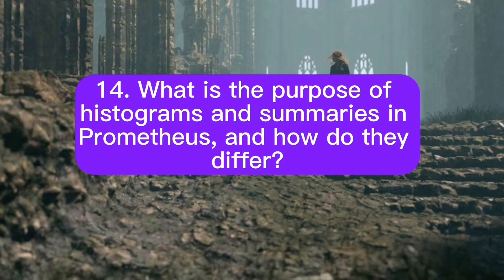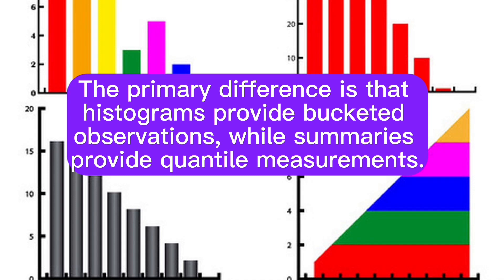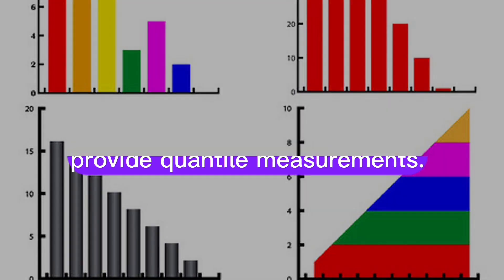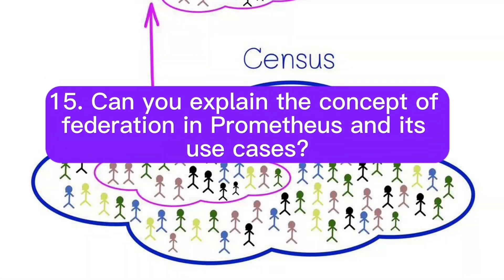What is the purpose of histograms and summaries in Prometheus, and how do they differ? Histograms and summaries are used to measure and report the distribution of values. The primary difference is that histograms provide bucketed observations, while summaries provide quantile measurements. Summaries are typically more suitable for monitoring and alerting.